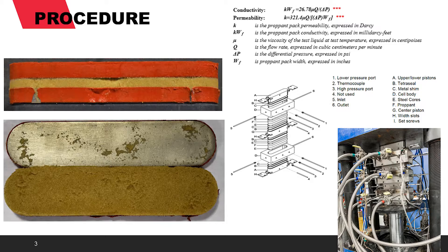Depending on what basin the proppant sample came from determines the stress that it will be tested at. For example, our samples from North Dakota are tested at 9,000 PSI, while the Texas samples are tested at 6,000 PSI.